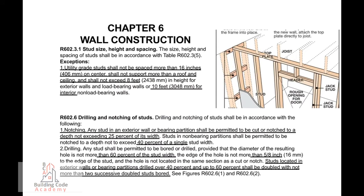Chapter 6, Wall Construction. R-602.3.1, Stud Size, Height, and Spacing. The size, height, and spacing of studs shall be in accordance with Table R-602.3-5. Exception 1: Utility-grade studs shall not be spaced more than 16 inches (406mm) on center, shall not support more than a roof and ceiling, and shall not exceed 8 feet (2,438mm) in height for exterior walls and load-bearing walls, or 10 feet (3,048mm) for interior non-load-bearing walls.